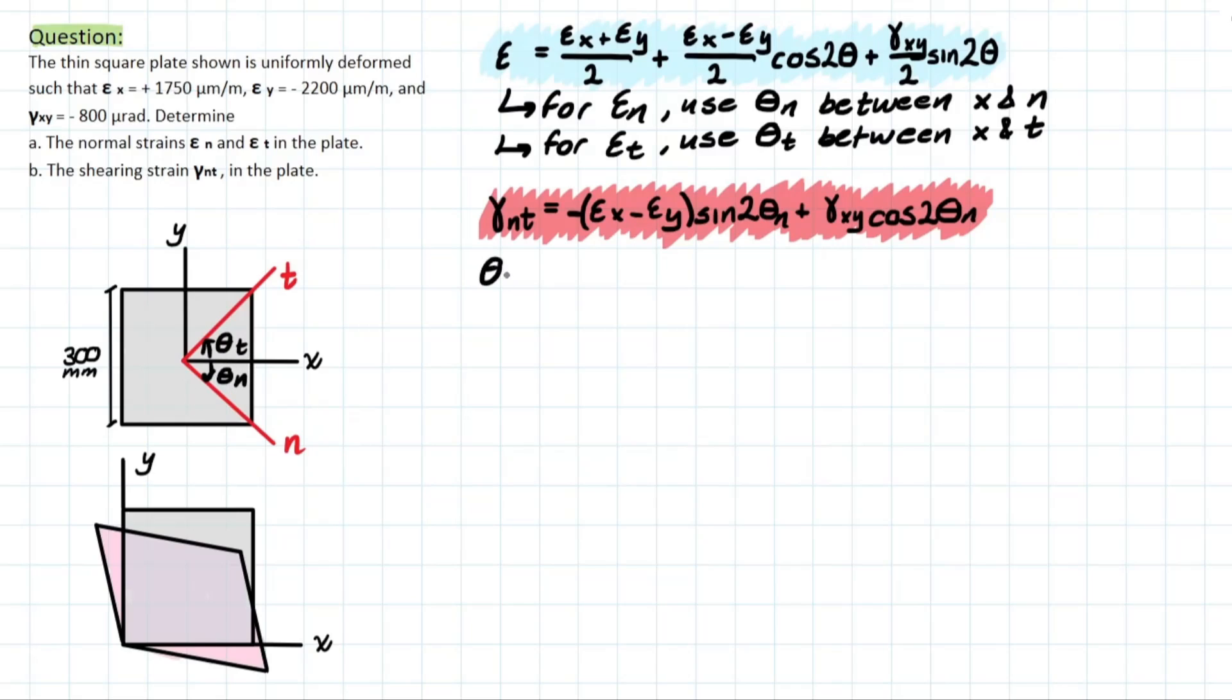Theta n is going clockwise, meaning this value is going to be negative. And we can deduce that this angle is going to be 45 degrees because we have an evenly sized plate with this axis going directly to the corner of it, meaning that this will be negative 45 degrees. And theta t will be positive 45 degrees, going in the opposite direction from x to t. And now we can simply start plugging in. I'll stick around here while we do the first one.